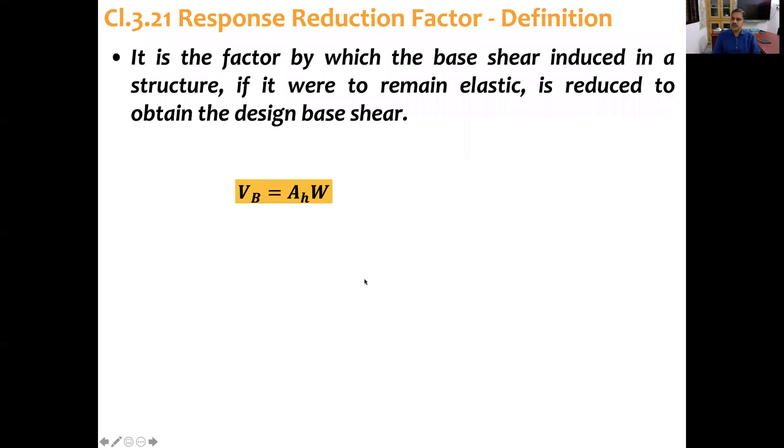AH is base shear coefficient and W is seismic weight. AH in turn is calculated using this equation: Z by 2, SA by G, divided by R by I. Here R represents response reduction factor, I is importance factor, Z is zone factor, and SA by G is the acceleration value.